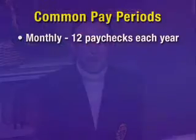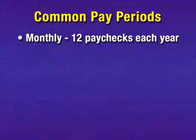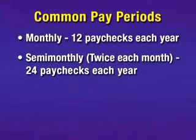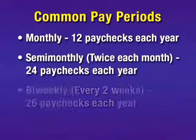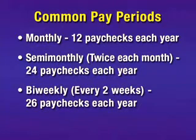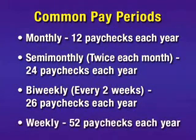Now let's discuss equivalent earnings for different pay periods. The common pay periods are: monthly, in which the employee receives 12 paychecks each year; semi-monthly, or twice each month, in which the employee receives 24 paychecks each year; bi-weekly, every two weeks, in which the employee receives 26 paychecks each year; and weekly, which is 52 paychecks each year.